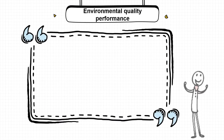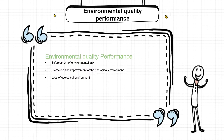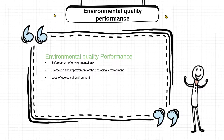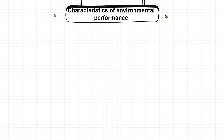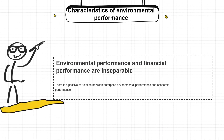When finance faces quality problems, the performance of environmental quality mainly depends on the implementation of environmental laws, the degree of damage to the ecological environment, and the protection and improvement of the ecological environment. Environmental performance and financial performance are inseparable because there is a positive correlation between them — if environmental performance is good, financial performance will also be good. Win-win.